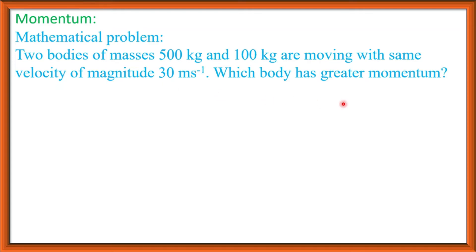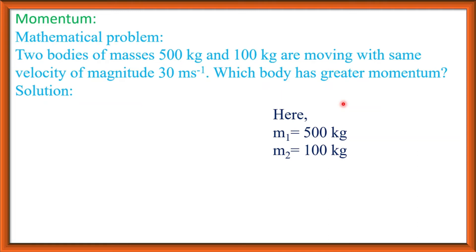Mass of first body M1 is 500 kg. Mass of second body M2 is 100 kg. And the common velocity is 30 meter per second. We need to determine P1, the momentum of the first body, and P2, the momentum of the second body, then compare them.